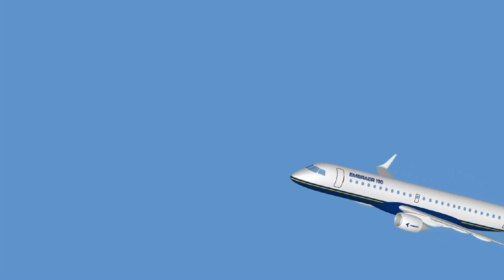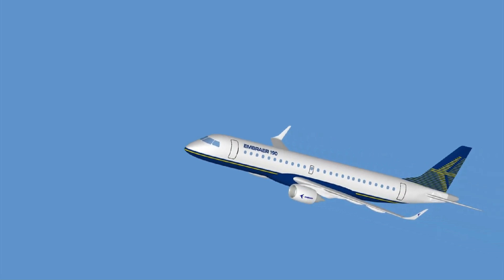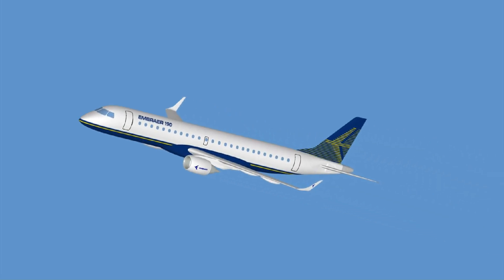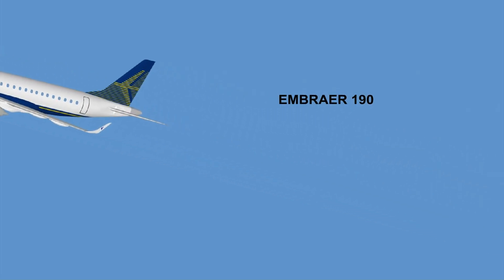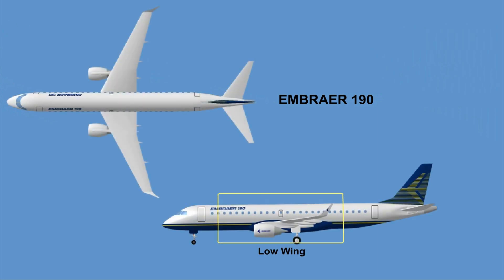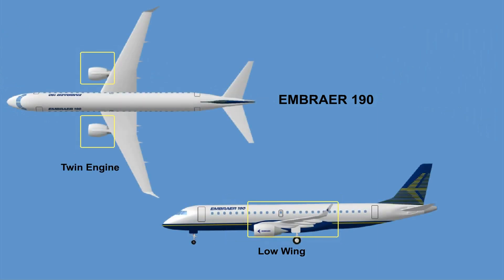The following short introduction will give you a general overview of the Embraer 190. The Embraer 190 is a low-wing, twin-engine jet airplane of conventional structure designed for medium-to-short-range operations.